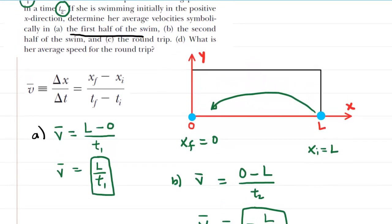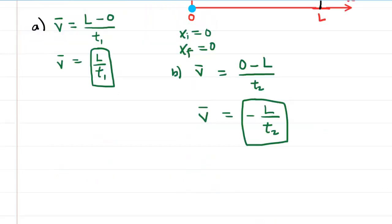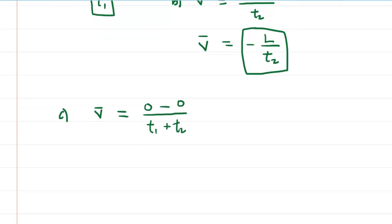Moving on to part C, we are asked for the average velocity of the round trip. The swimmer begins at the origin, so her initial position xi equals 0. She swims down to L, turns around, and comes back to her starting point, so her final position is also 0. When we calculate the average velocity, we take a final position of 0, subtract the initial position of 0, and divide by the entire time interval T1 plus T2. The numerator simplifies to 0, and 0 divided by any time interval is simply 0.